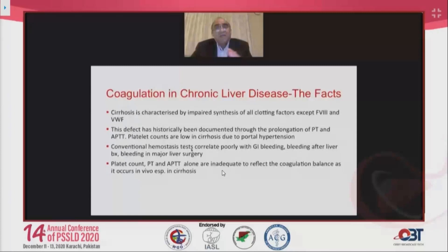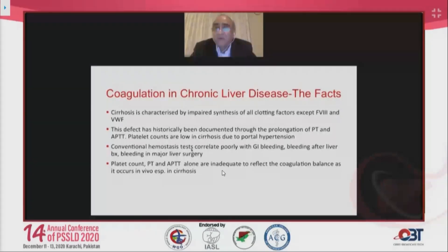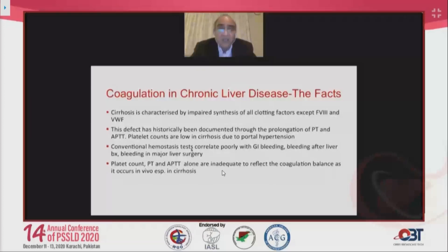Key facts about coagulation in cirrhosis: the condition is characterized by impaired synthesis of all clotting factors except Factor VIII and von Willebrand factor. This has historically been documented through prolongation of PT and aPTT, and platelet counts are low due to portal hypertension. Conventional hemostasis tests correlate poorly with GI bleeding, post-liver biopsy bleeding, and major liver surgery bleeding. Platelet count, PT, and aPTT alone are inadequate to reflect the true in vivo coagulation balance in cirrhosis.